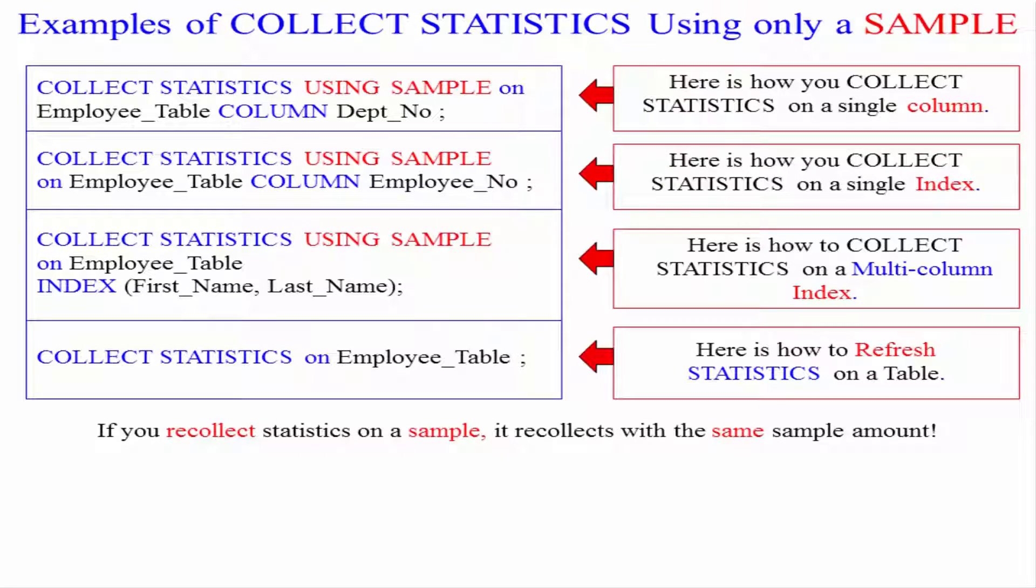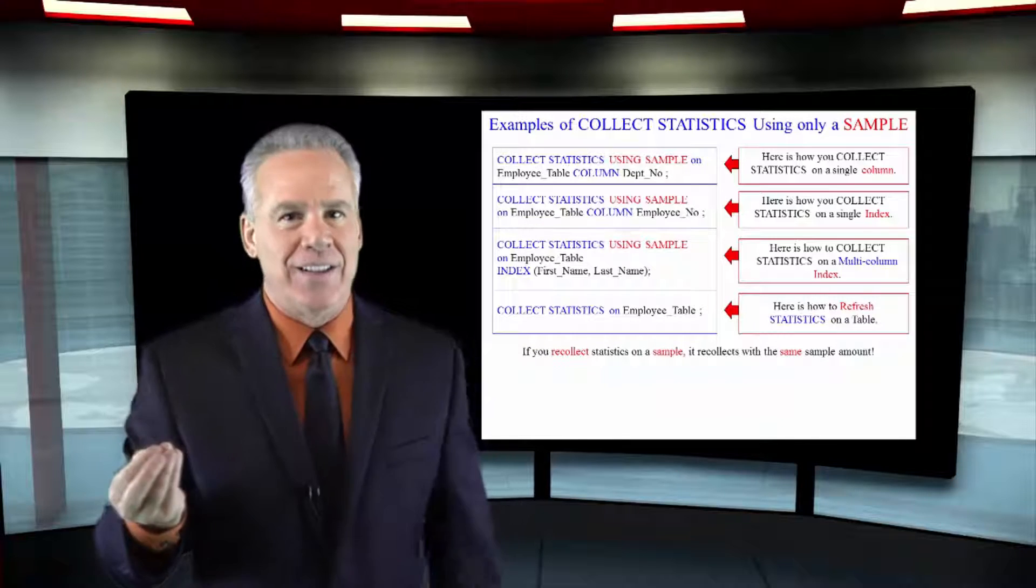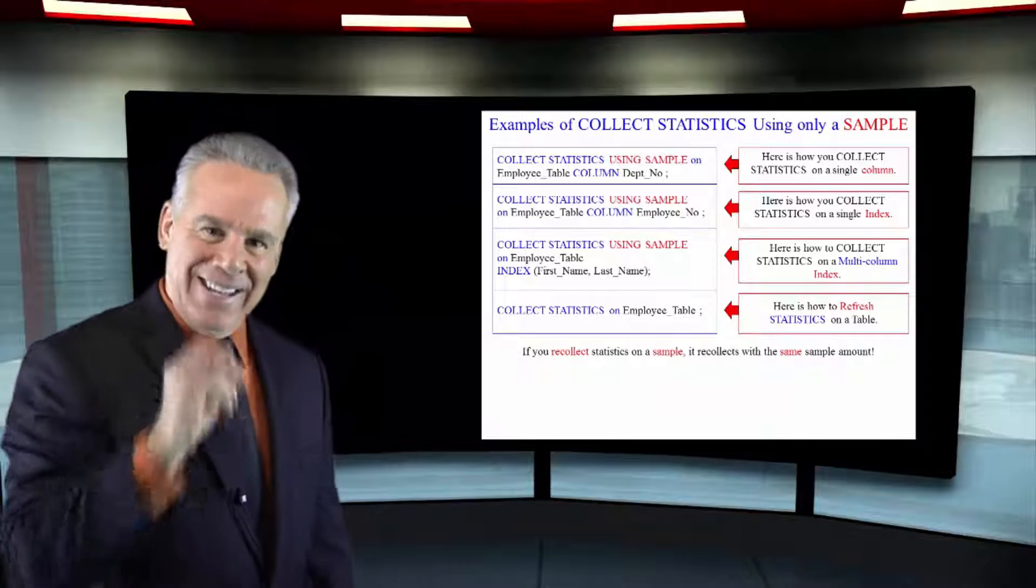As you can see here, collect statistics using sample on table name index, open paren, first comma, second column. And that's going to be because it's a multi-column index.